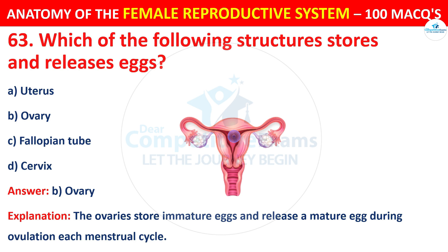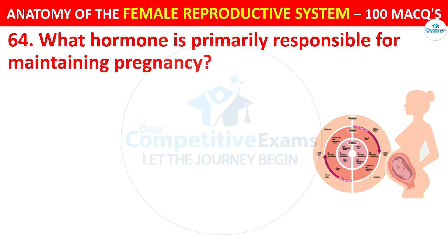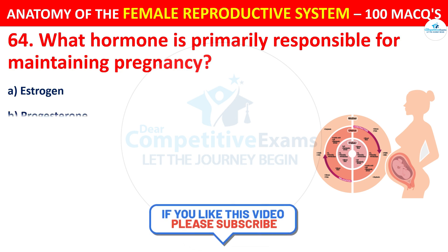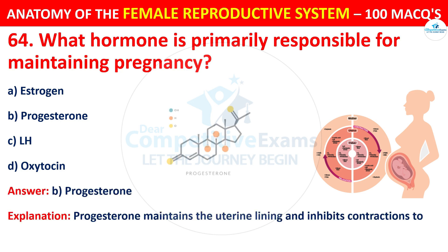Question number 64. What hormone is primarily responsible for maintaining pregnancy? Options: estrogen, progesterone, LH, or oxytocin. The correct answer is B — progesterone. Progesterone maintains the uterine lining and inhibits contractions to support the pregnancy.